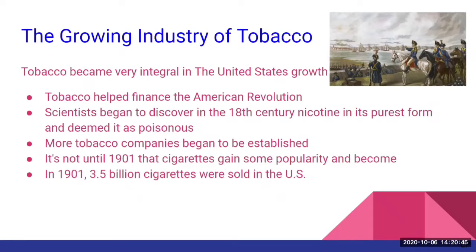This is where tobacco comes in and solves new America's problems. The U.S. required a lot of revenue through trading tobacco with Europe, but because it depleted the nutrients in the soil, it only lasted about three years before they turned to other crops to trade — that's how trading expanded and built up the U.S. Scientists in the 18th century found that nicotine in its purest form was absolutely poisonous. Nicotine was first isolated from tobacco leaves in 1828 by two German chemists, Wilhelm Heinrich Posselt and Karl Ludwig Reimann. Its structure was determined in 1893, and it was first synthesized in 1904.